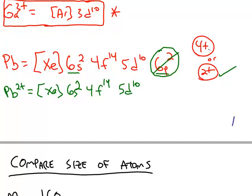If we continue on to make a positive 4 cation, now we're going to remove both of the electrons from the 6s. So the lead 4+ has a xenon core, completely filled 4f, and completely filled 5d.